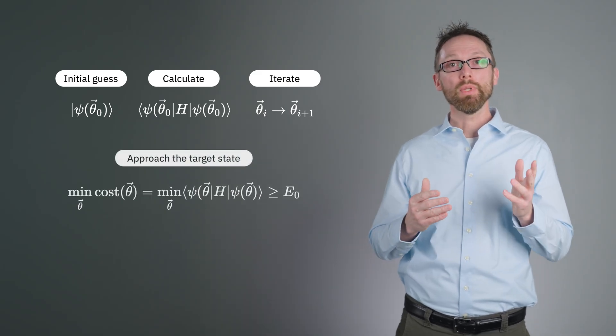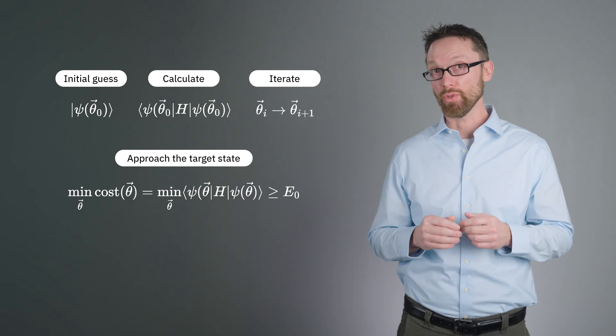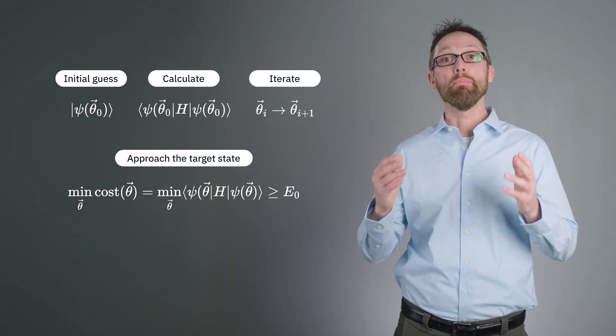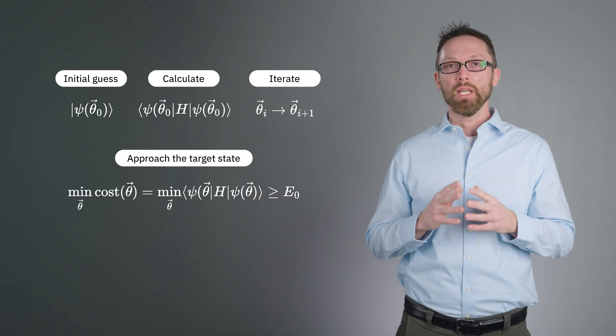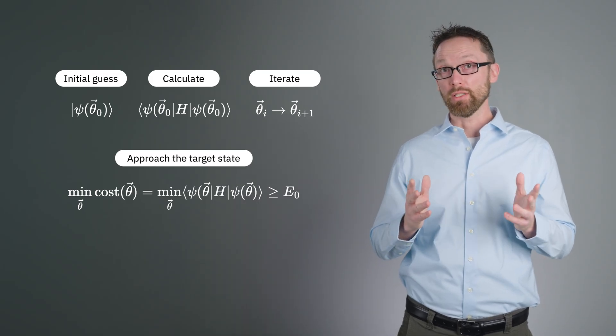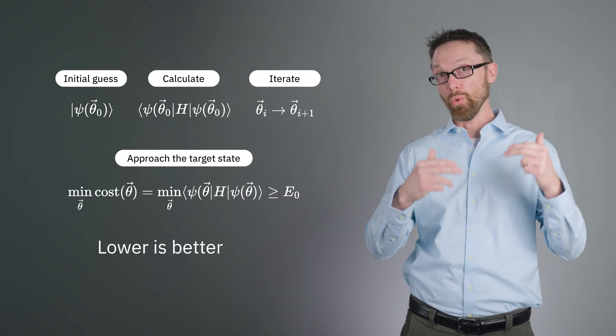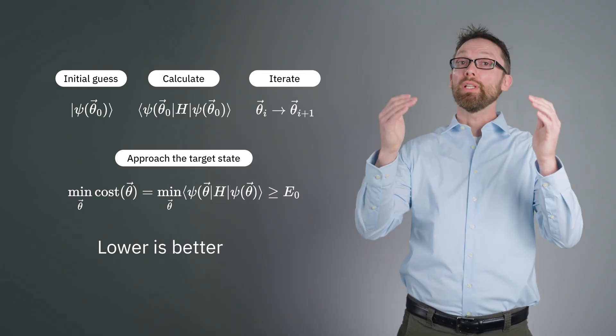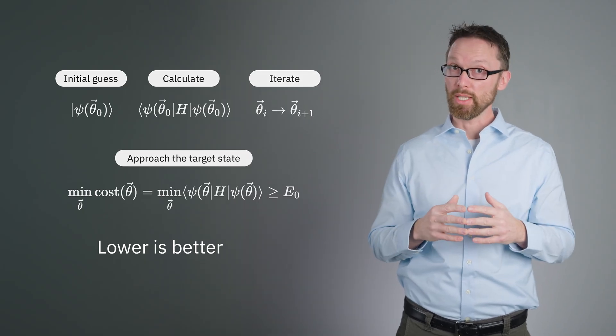Fourth, we would use accumulated information about the landscape of possible states in your variational subspace to make better and better guesses and approach the target state. The variational principle guarantees that our variational state cannot yield an eigenvalue lower than that of the target ground state. So the lower the expectation value, the better our approximation of the ground state. Let's talk about the difficulty of each step in this approach.